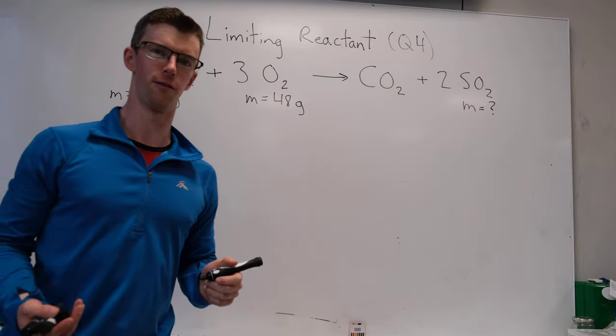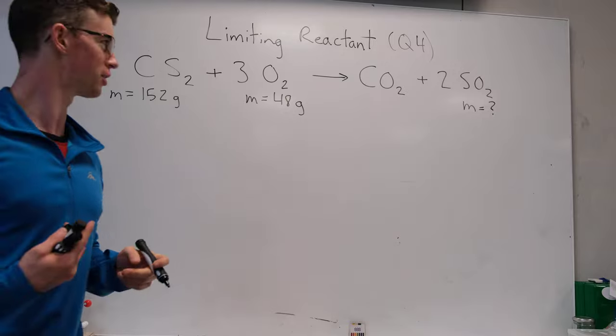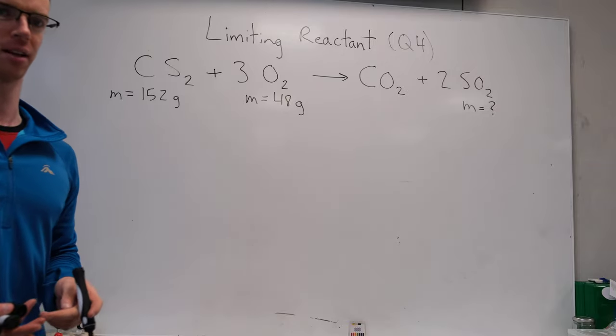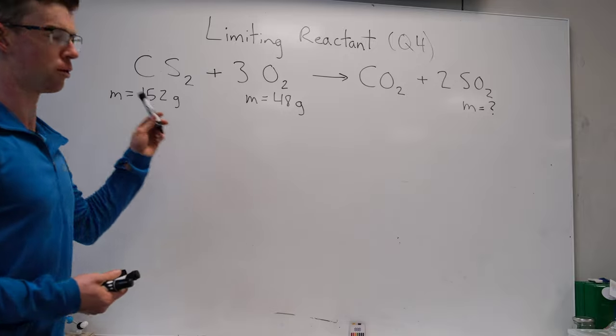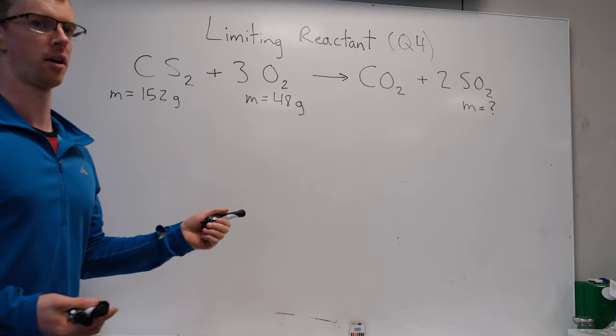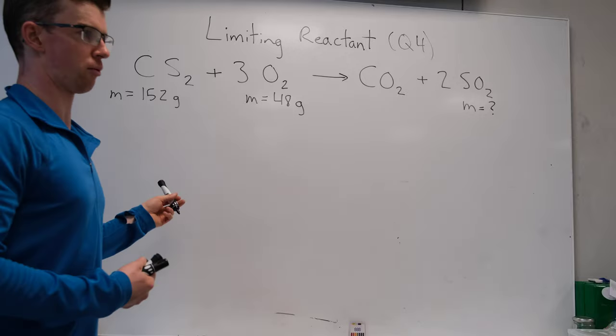Kia ora. I thought I'd take up question four because it's a particularly tricky one involving a concept called limiting reagents. Basically, we're given the quantities of two of our reactants and we're trying to figure out how much product we'll make. It will depend on which reactant we run out of first.